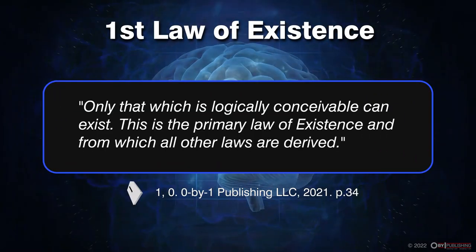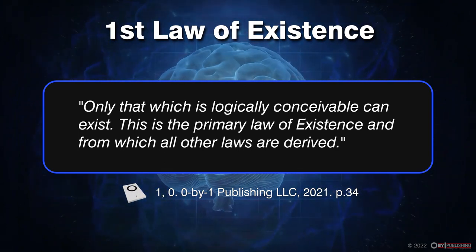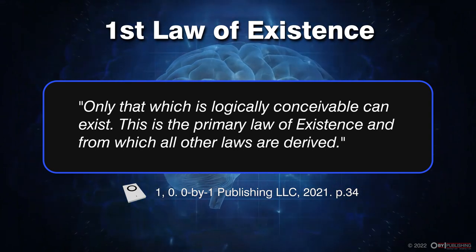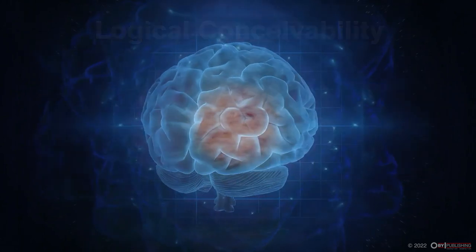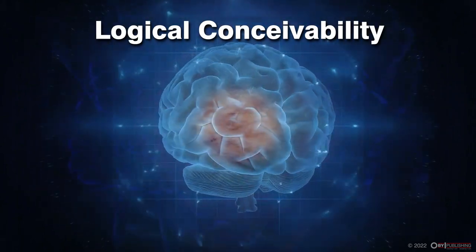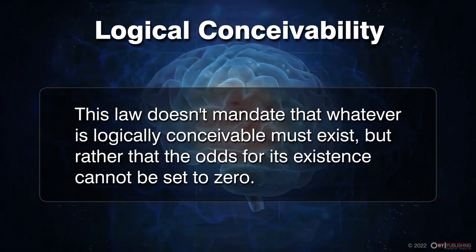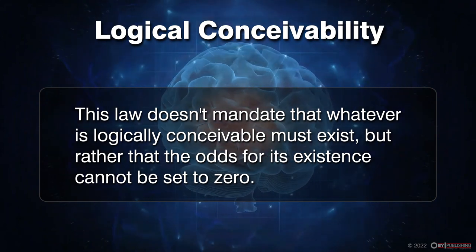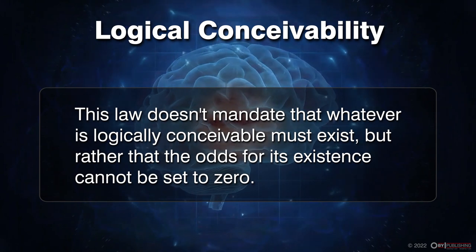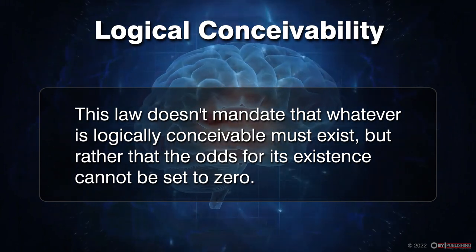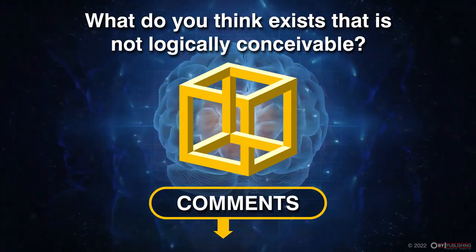First law of existence: only that which is logically conceivable can exist. This is the primary law of existence from which all other laws are derived. There is a mandatory requirement for everything that exists, and that is logical conceivability. Whatever attempts to move into existence must first pass the litmus test of conceivability. This law doesn't mandate that whatever is logically conceivable must exist, but rather that the odds for its existence cannot be set to zero. A good way to test the validity of this law is to try to think of anything that exists that's not logically conceivable — if you think you have something, let us know in the comments section.